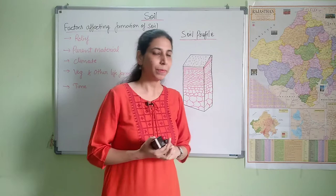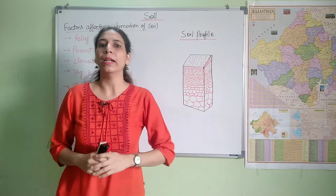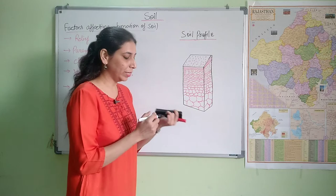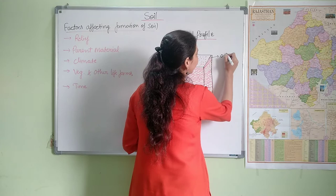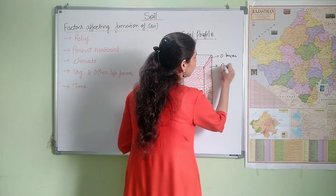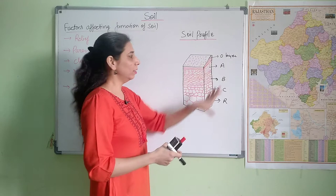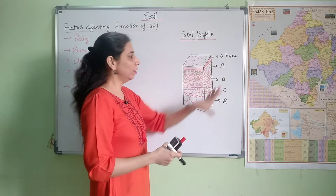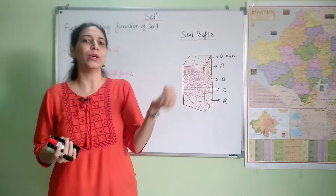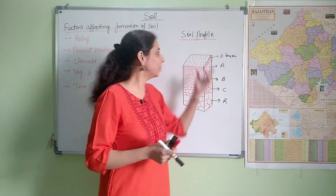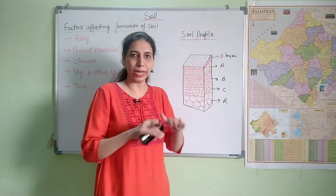Now we have talked about factors. Next, we will see the soil profile. How many layers are there? So this is your O layer — you can also call it a horizon. Then comes A horizon, then B layer, then C horizon, and then R, which is the bedrock. A, B, and C are the three important layers and are the part of functional soil. The O layer at the top contains organic litter — dry leaves, leaves of trees, dirt, etc. — and is not a part of functional soil.